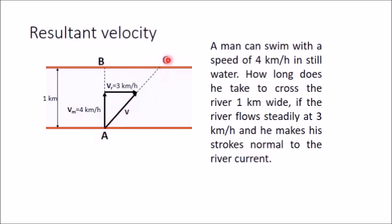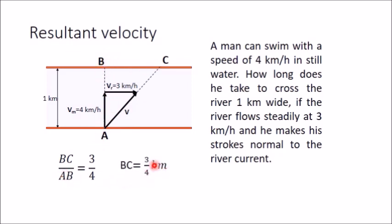The distance BC or AC can be calculated using two similar triangles. BC divided by AB equals 3 divided by 4, and since AB is 1 km, BC equals 3/4 km. Then AC can be found using Pythagoras: root of AB squared plus BC squared, that is root of 1 squared plus (3/4) squared. Once you have velocity V and distance AC, you can also calculate the time required to travel from A to C.